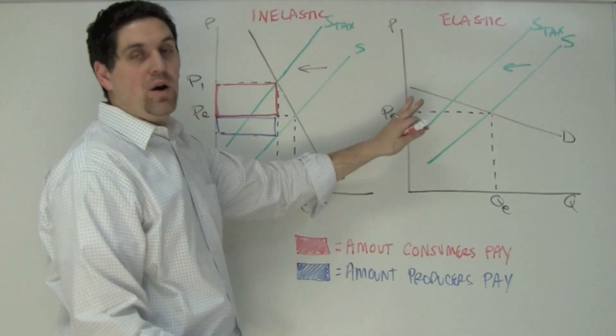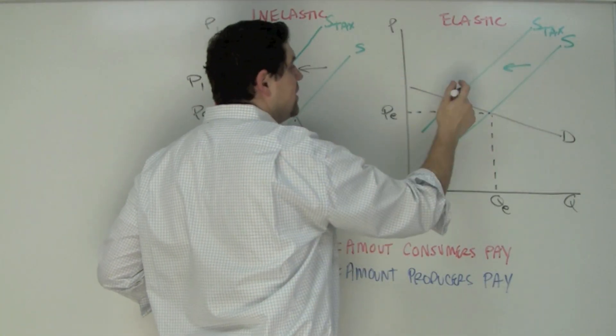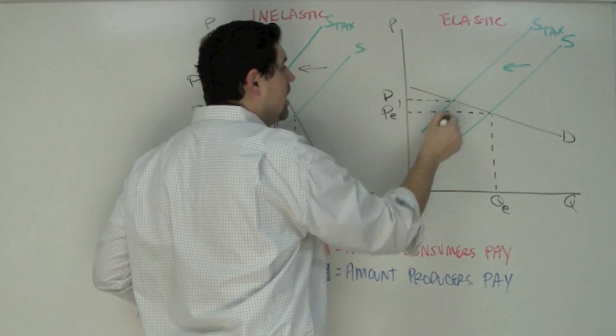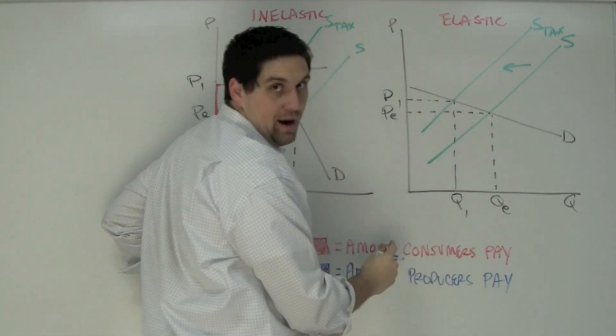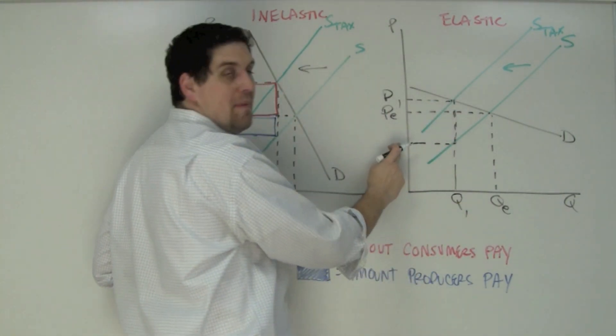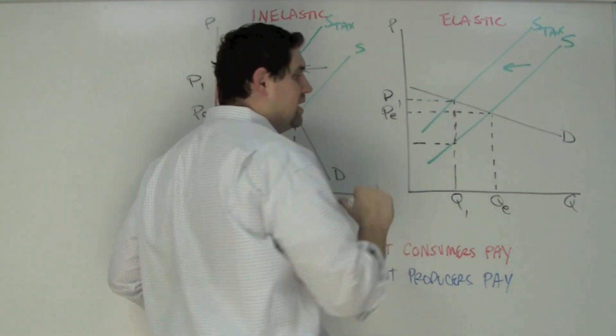Now over here, when the demand is relatively elastic, supply shifts left, the new price is here and the new quantity is right there. Producers get to keep this amount down here because they've got to pay that vertical distance amount of tax.